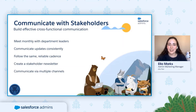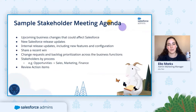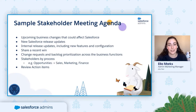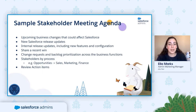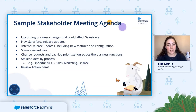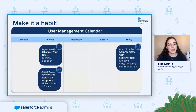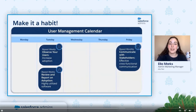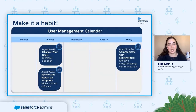Here's a sample agenda for this meeting. It includes things like upcoming business changes that could affect Salesforce, new Salesforce release updates, internal release updates. You could use this time to share a recent win or talk about a new business process, change requests, backlog prioritization, and reviewing various action items. To get started with stakeholder communication, we recommend scheduling a 60-minute meeting once a month. Remember to schedule prep time for yourself in advance of this meeting.